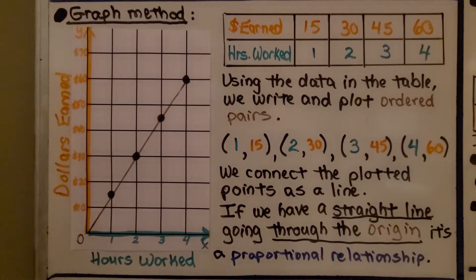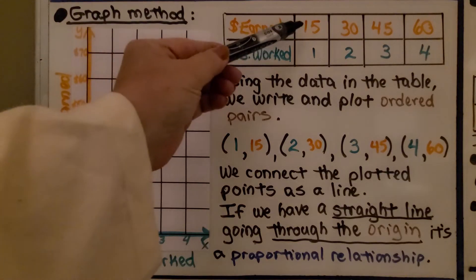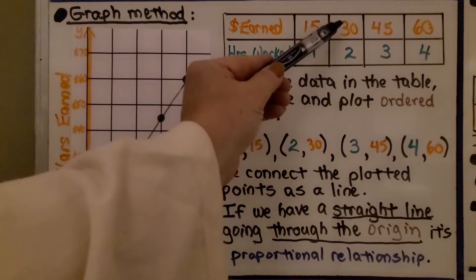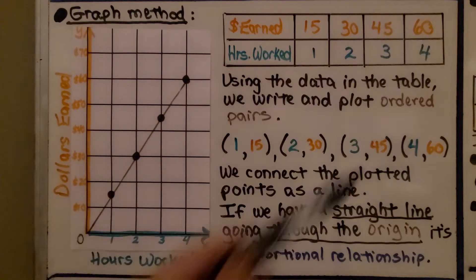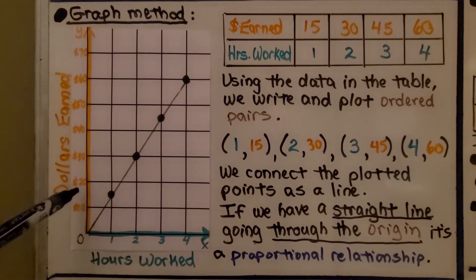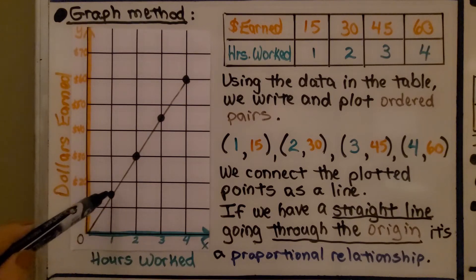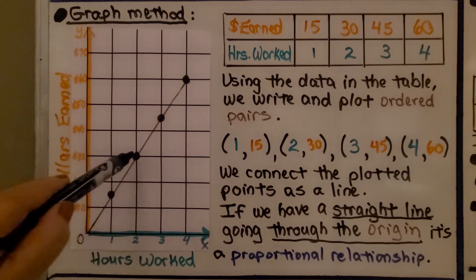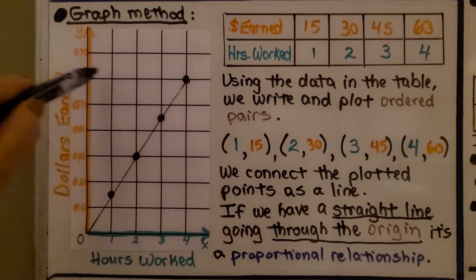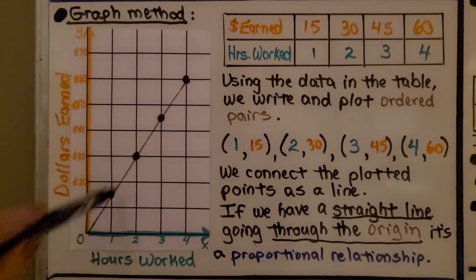Now let's take a look at the graph method. We have a table: in one hour worked, $15 is earned; two hours is $30; three hours is $45; four hours is $60. Using the data in the table, we write and plot ordered pairs. One hour is $15, two hours is $30, three hours is $45, and four hours is $60. We connect the plotted points as a line, and if we have a straight line going through the origin, it's a proportional relationship.